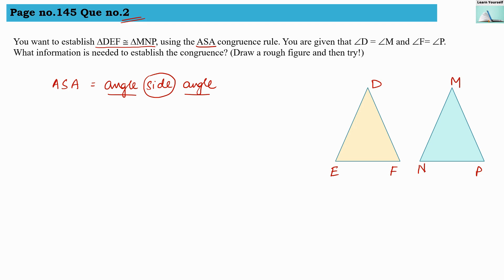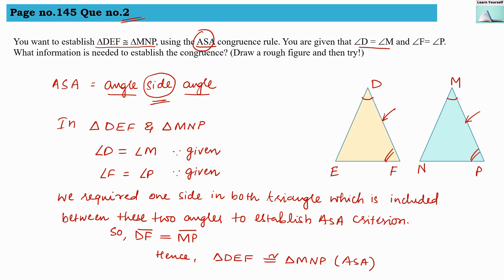The side must be sandwiched between the two angles. You are given that angle D equals angle M, and angle F equals angle P. To satisfy ASA, we need one side included between these two angles. That side is DF in triangle DEF and MP in triangle MNP. So DF must equal MP to establish the congruence as per the ASA criteria.